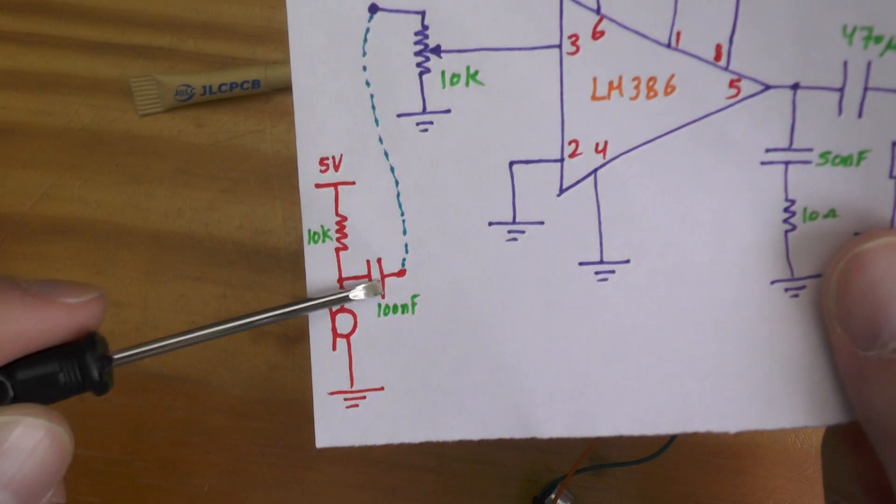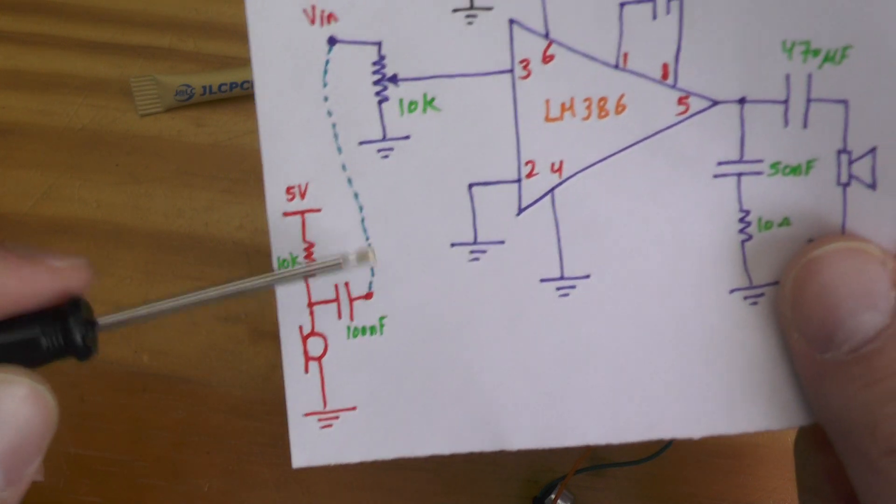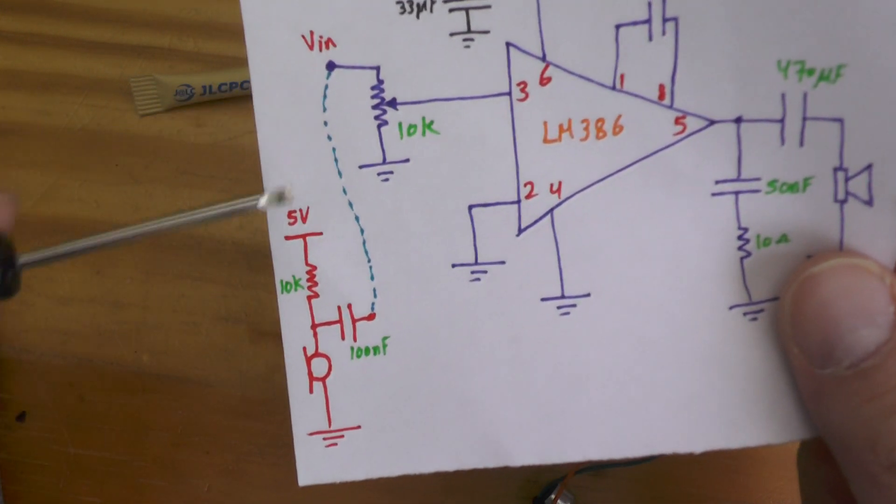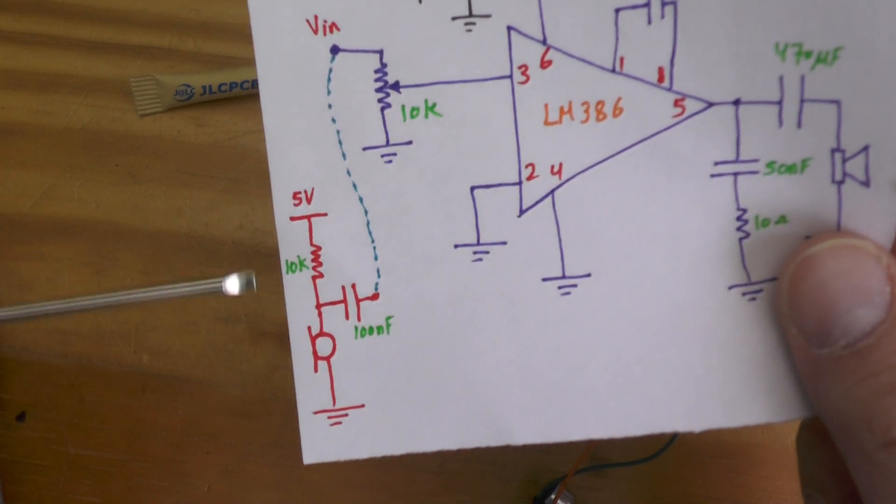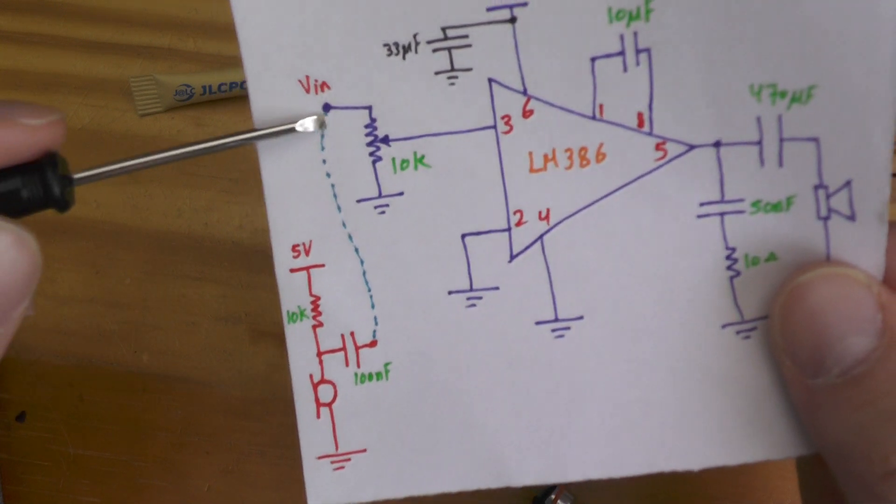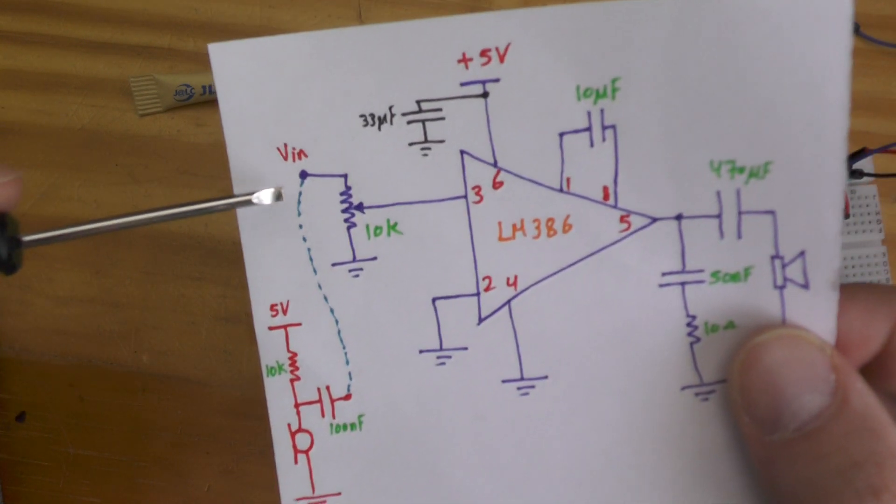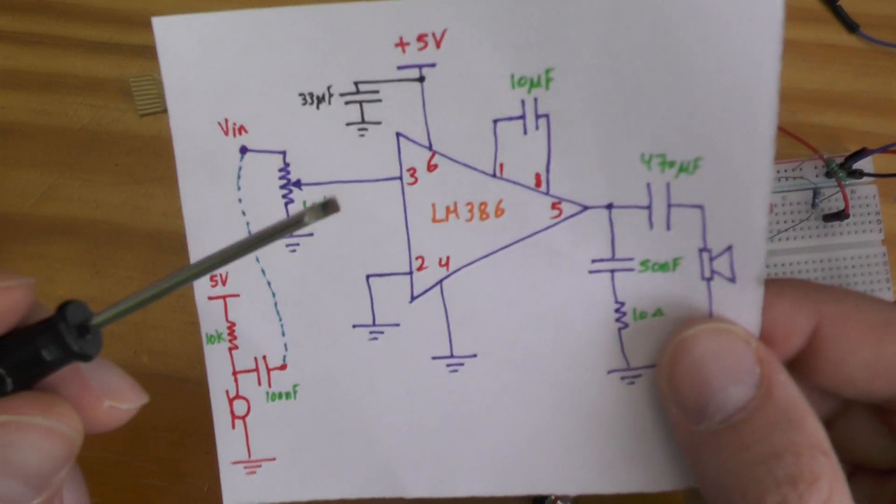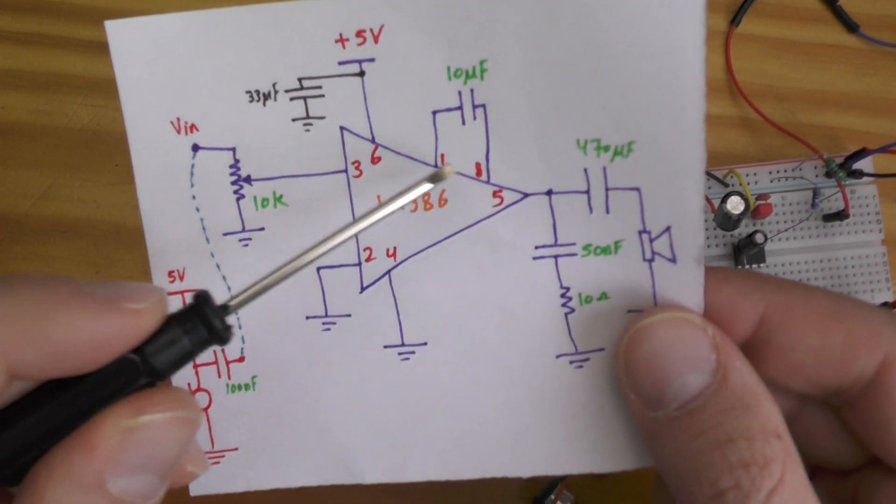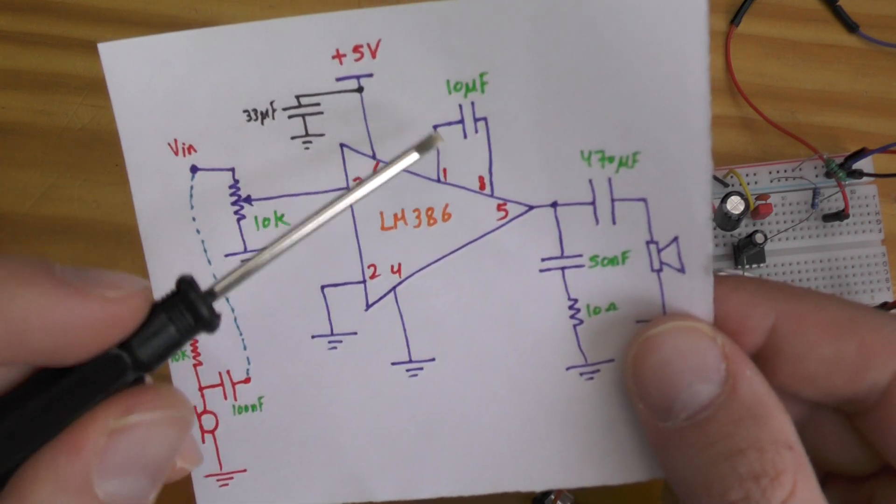Which is the 10 kilovolt here, or 10 kilo ohm, and 100 nanofarad just to cancel any DC input going to this Vin. So this circuit is needed when you have a microphone, but if you have any other signals, you can straightforward just feed it here.